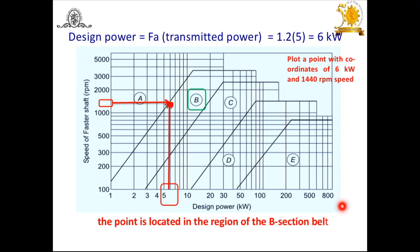In the next step, we find the belt cross-section. The design power is 6 kW on the X-axis. Locating 6 kW and drawing a line vertically up, then checking the speed of the faster shaft at 1440 RPM, the point falls in region B. Therefore, the cross-section of the belt selected is B.